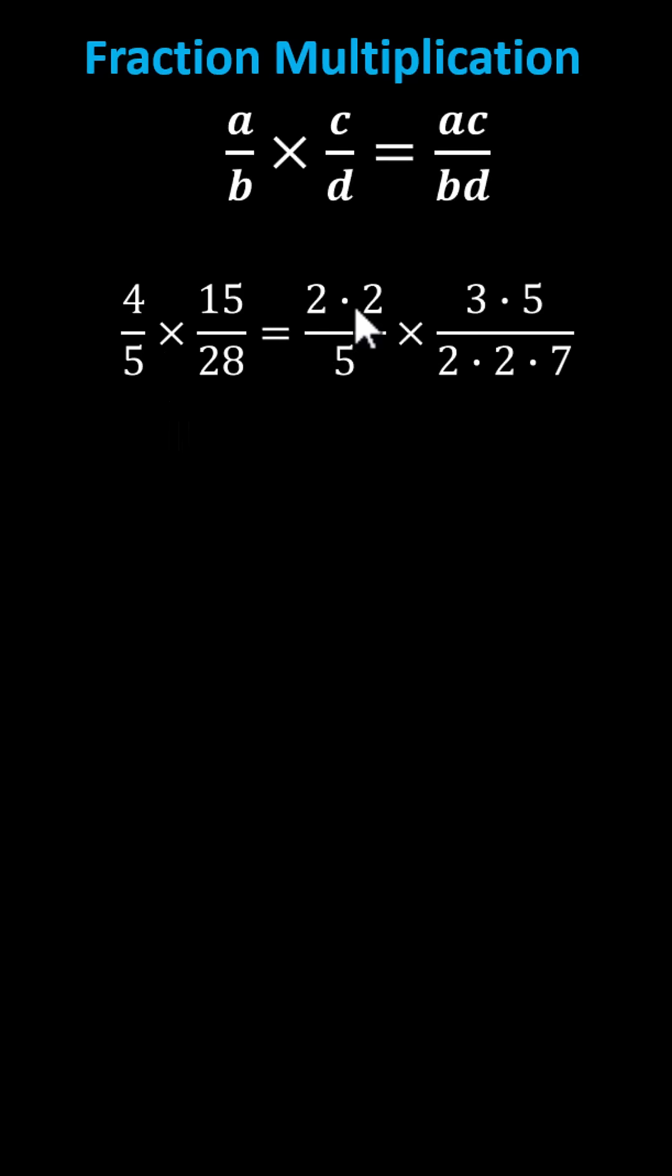The prime factorization of 4 is 2 times 2, 5 is prime, the prime factorization of 15 is 3 times 5, and the prime factorization of 28 is 2 times 2 times 7.